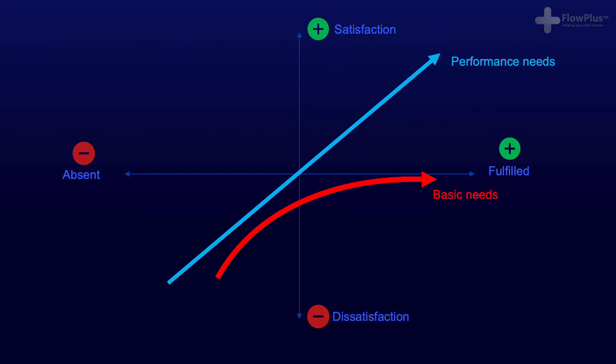Then finally, we have the last needs called the excitement needs. These are unspoken and something not expected by the customer — they go above and beyond. With the hotel example, this could be freshly baked bread in the morning or a cold glass of champagne waiting for you once you enter your room. If you notice on the graph, they cannot lead to dissatisfaction as they are not expected by the customer. But when they are present, they lead to a highly satisfied customer.